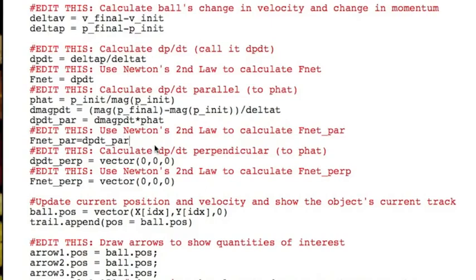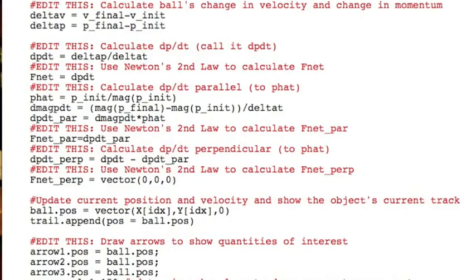Next, we can now describe the curving of the system's trajectory by computing dp dt perpendicular. We can do this in one line of code. See if you can select the line of code that works here. Here's the correct way to do this.